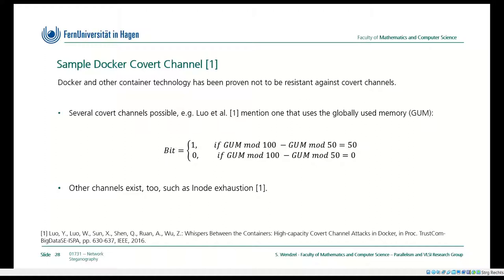Luo et al. proposed several covert channels, of which I just extracted one from their paper. It's one that uses the globally used memory because the containers can request information about the current state of the used memory on the host system. They transfer a 0 or 1 bit depending on the value of the globally used memory. If the globally used memory modulo 100, measured in megabytes, minus the globally used memory modulo 50 is 50, then it's a 1 bit. If it's 0, it's a 0 bit.